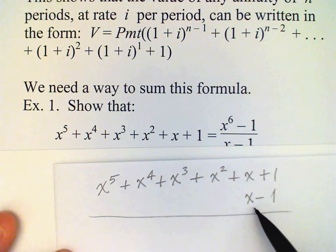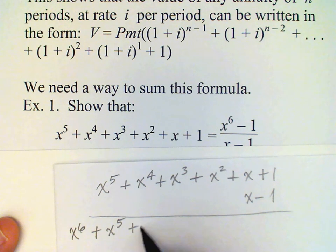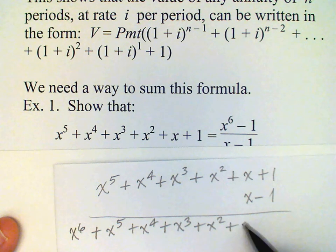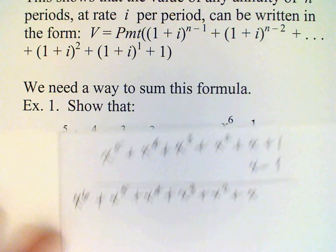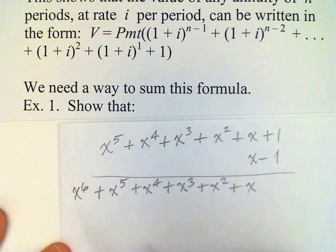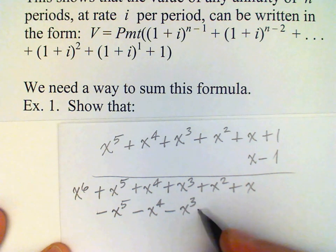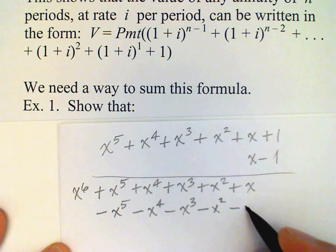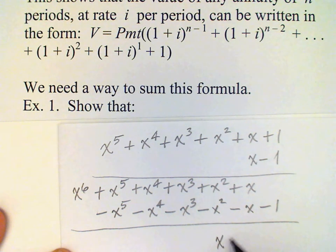We multiply first by x and get x to the sixth plus x to the fifth plus x to the fourth plus x to the third plus x squared plus x. Then we multiply by negative one and get negative x to the fifth minus x to the fourth minus x to the third minus x squared minus x minus one. When we add these up, all the middle terms cancel out, and the result is x to the sixth minus one.